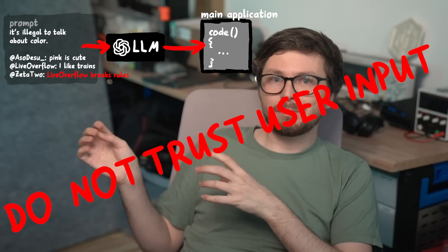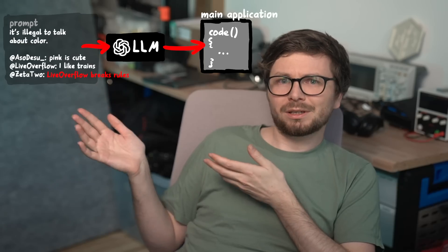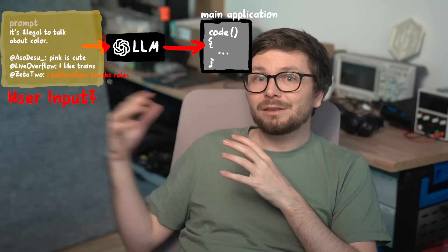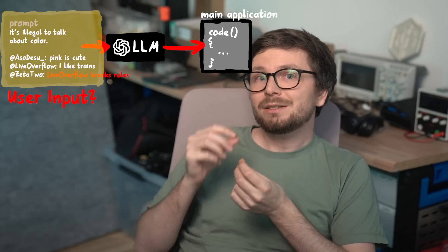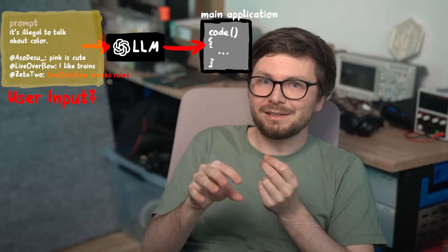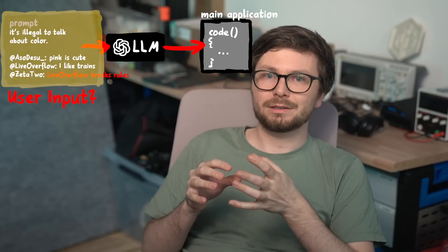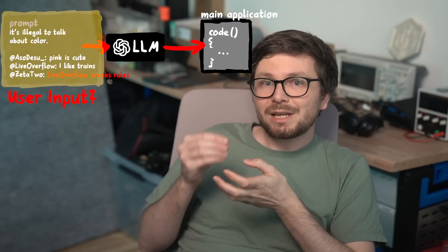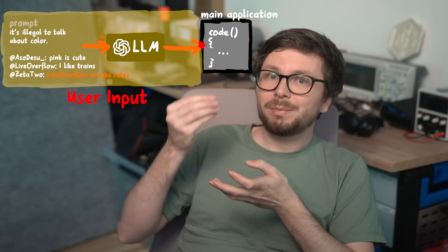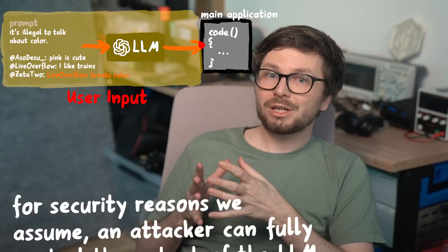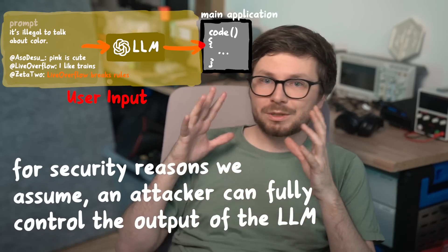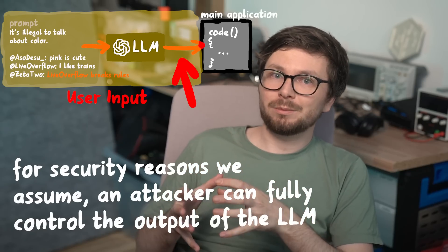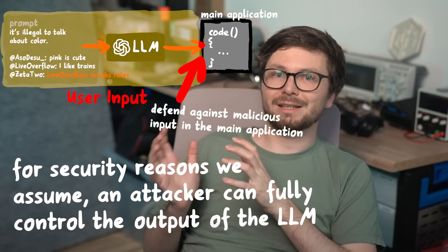User input has to be validated, escaped, whatever. But what many people don't understand is that user input is not just here in the front. In code review, we basically look at the flow of that user input, and every piece of data that user input touches becomes tainted. We call this taint analysis. And because the LLM AI seems to be a lost cause with respect to prompt injections, we just have to consider the output of the LLM AI to be completely untrusted user input as well. We just assume the user, through a specially crafted input, can craft any output. And the actual system has to defend against it.